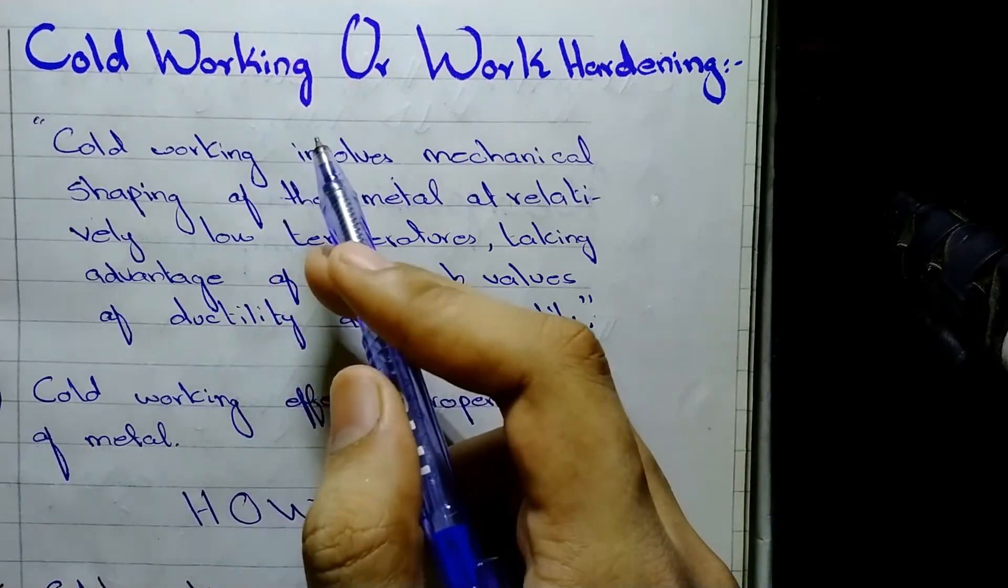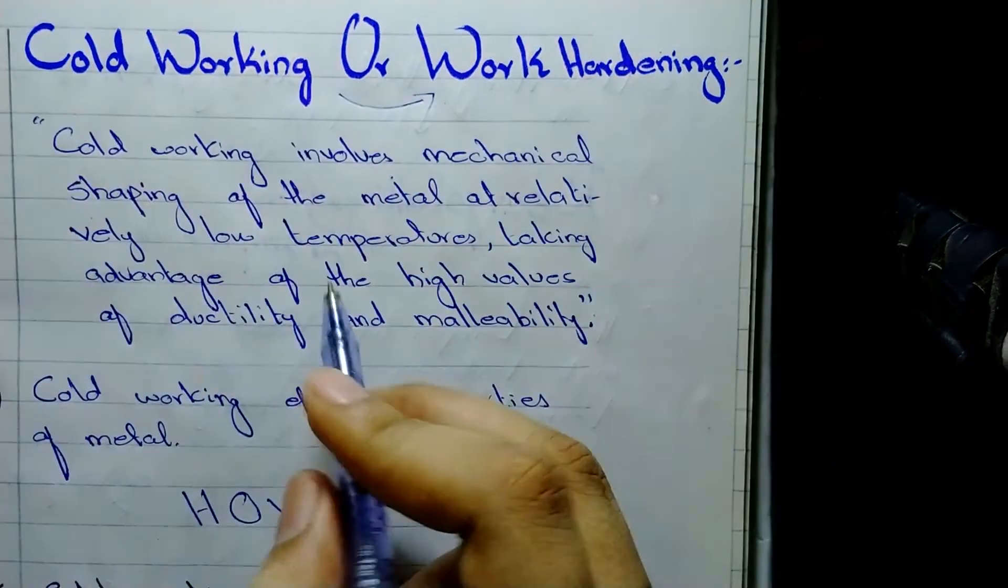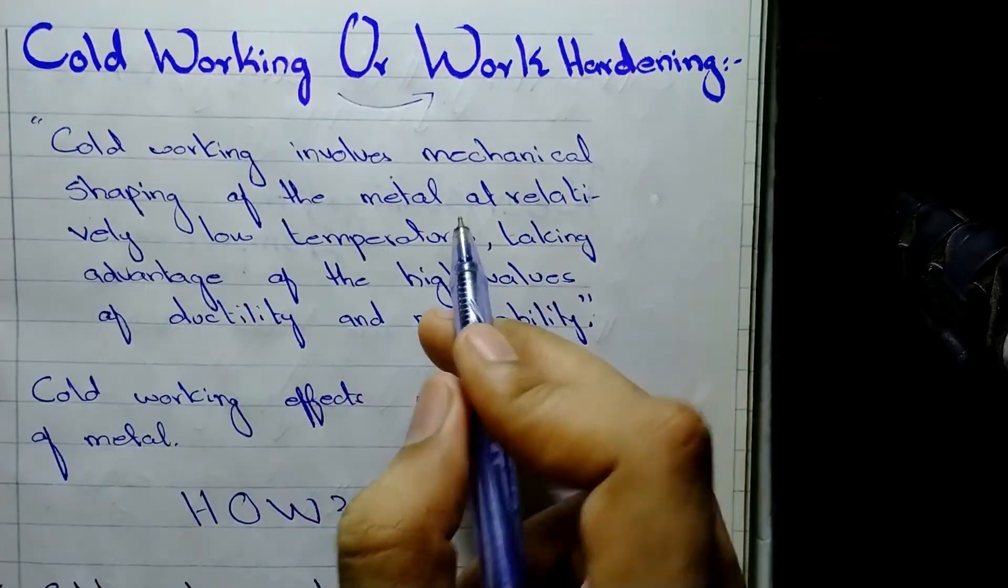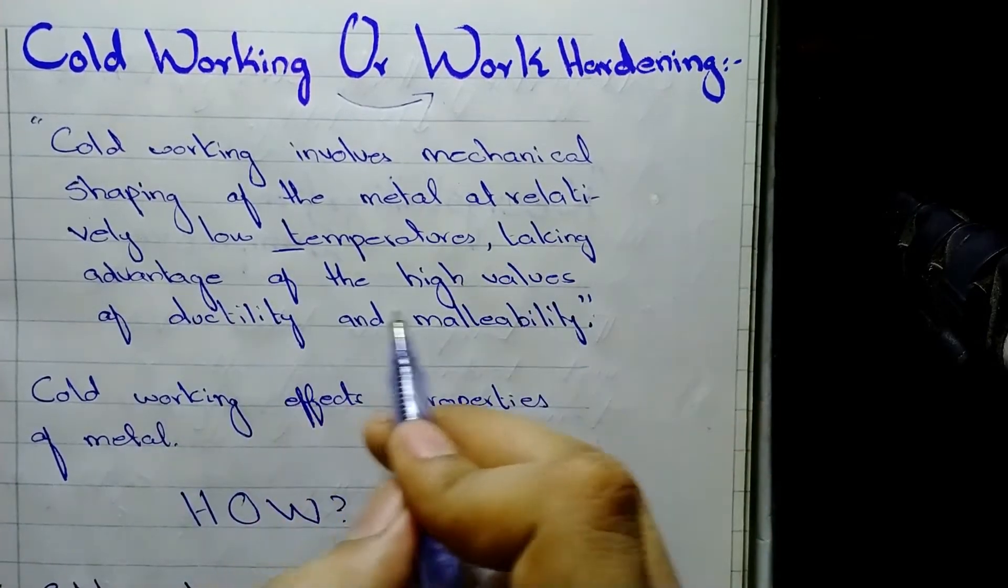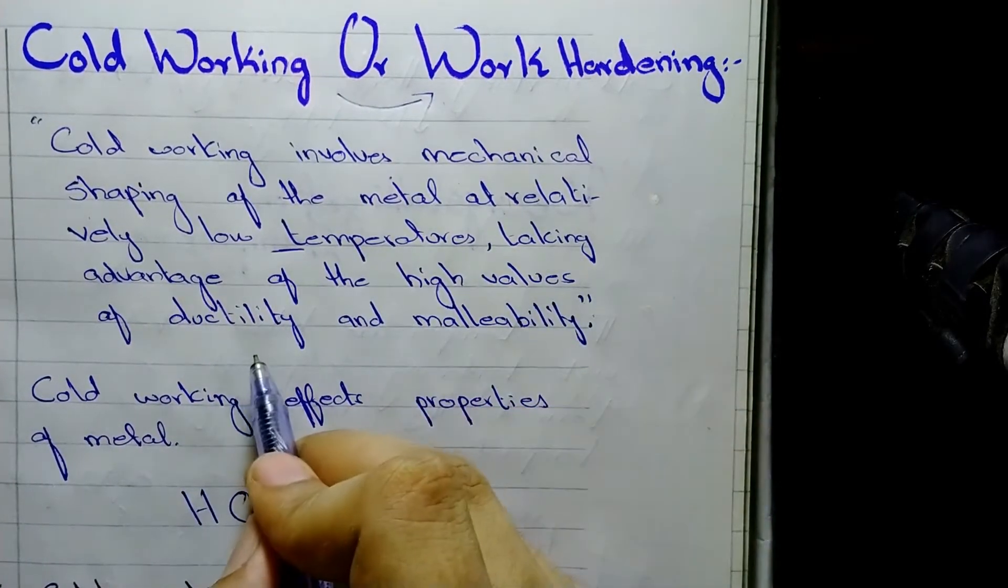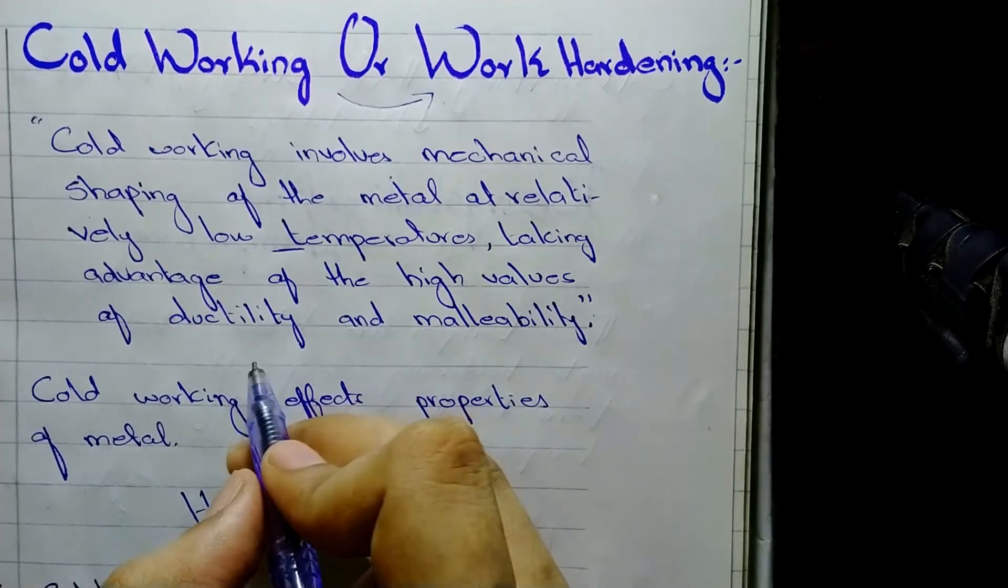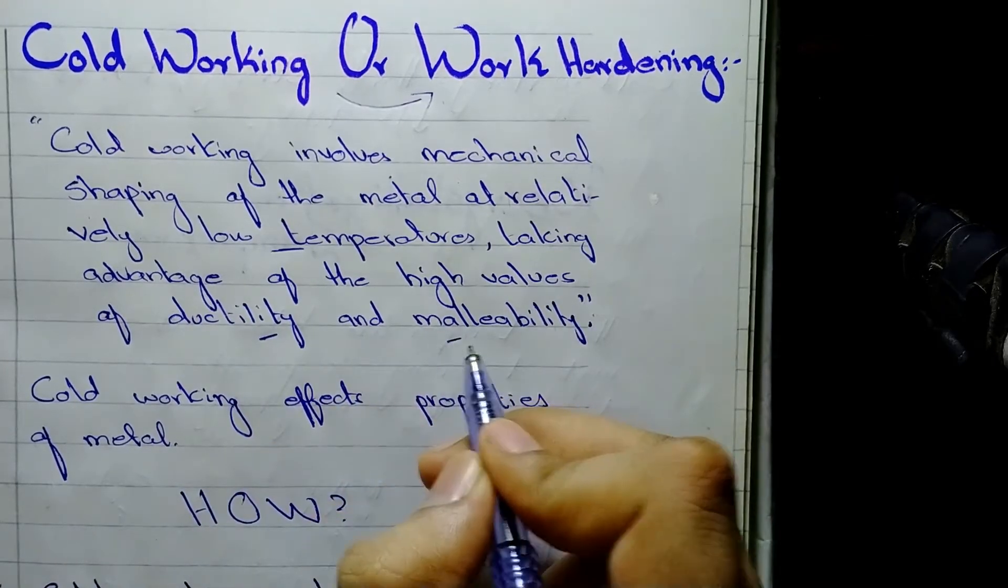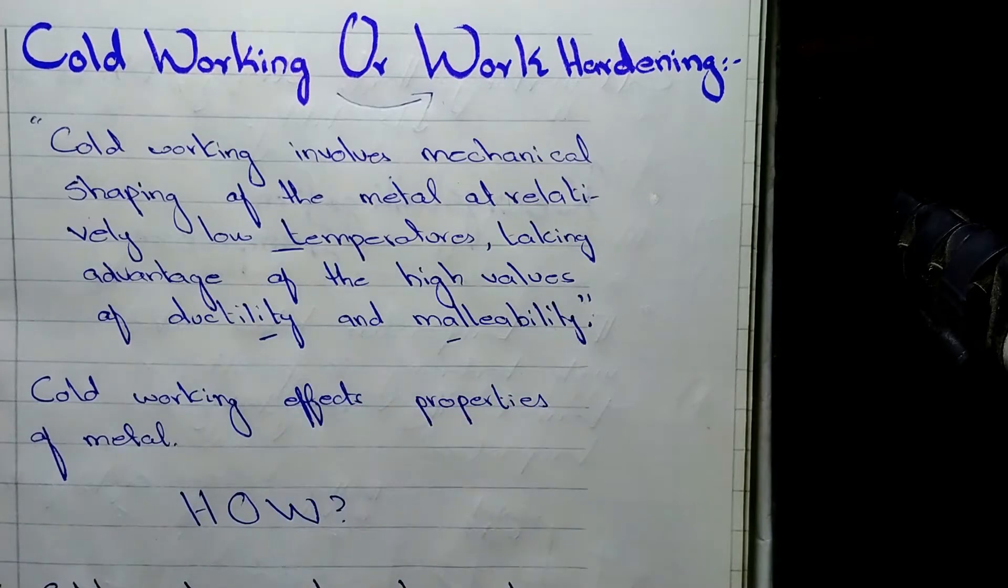These are the three methods by which you can compress a material or metal into thin sheets without breaking. Now the cold working. Cold working is also called work hardening. Cold working involves mechanical shaping of the metal at relatively low temperatures, taking advantage of the high values of ductility and malleability. That is why it is so crucial to know about ductility and malleability to understand the topic of cold working properly.